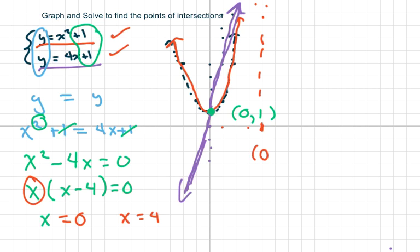When x is 0, y is 1. You plug 0 in both of those, you get 1. And when you plug in 4 to both of these, you get 17.